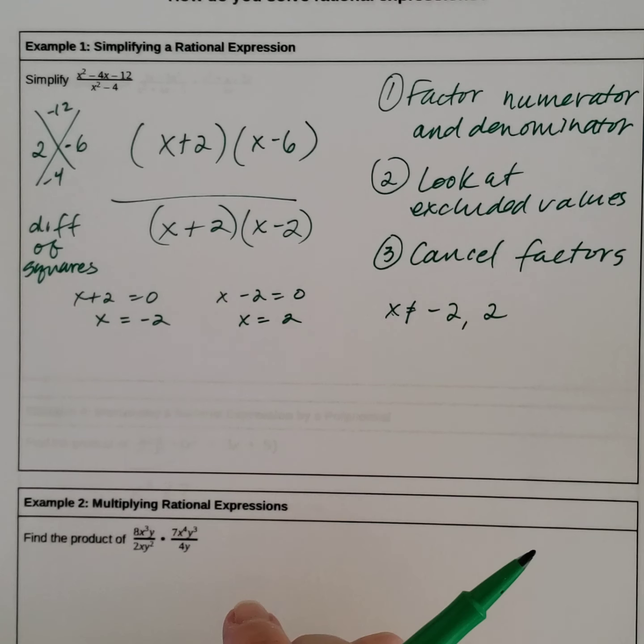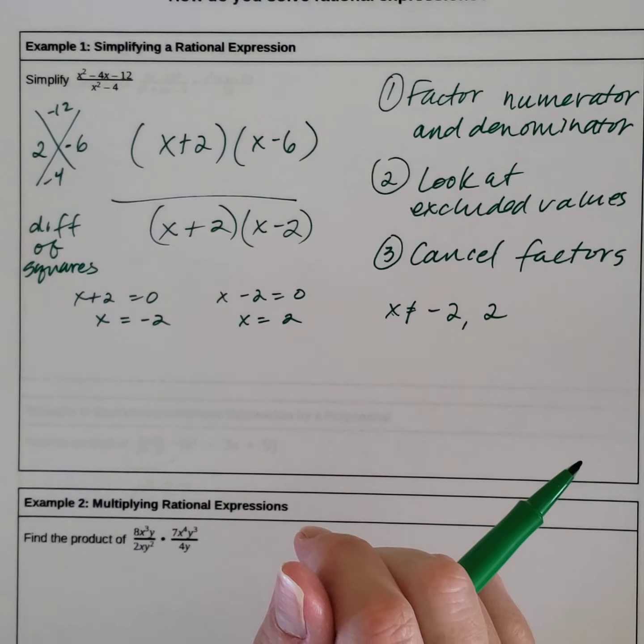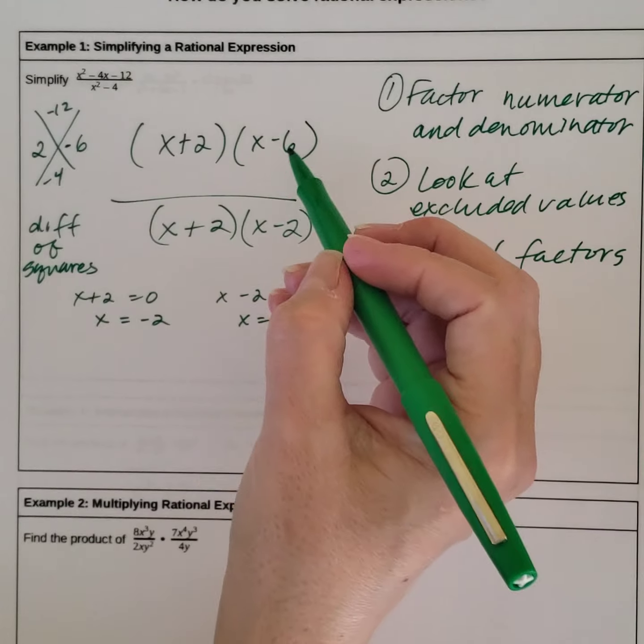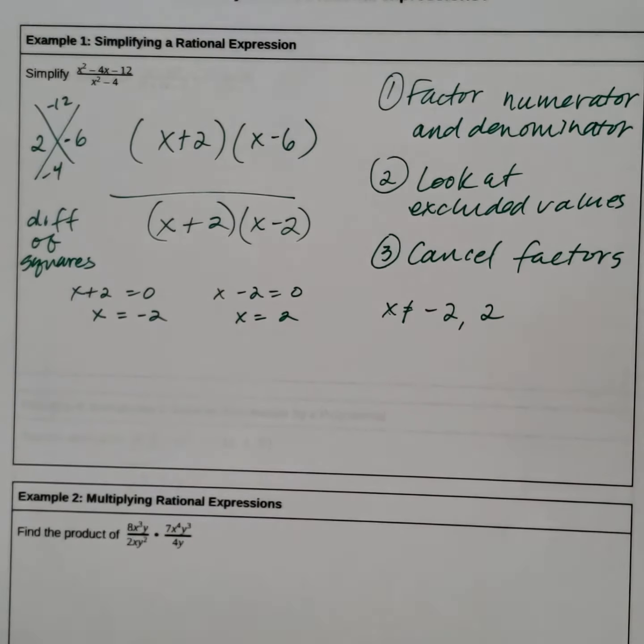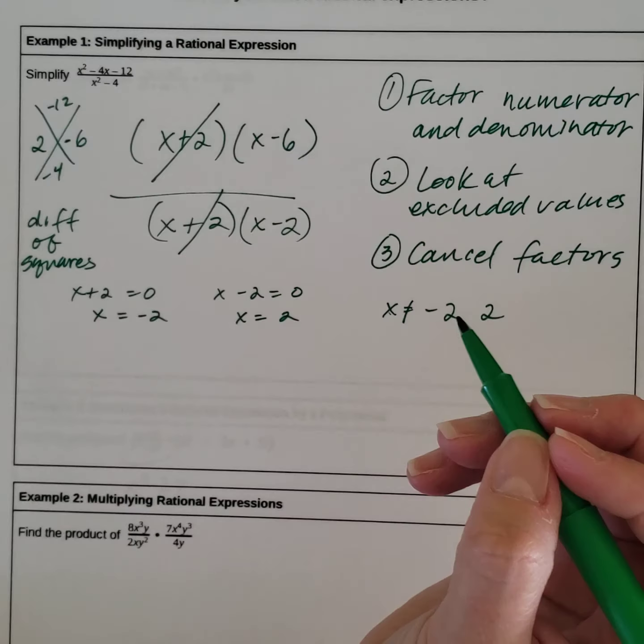Third step, cancel the factors. So what's in common? What do they have in the numerator and the denominator that we can factor out? It has to be a whole expression. So x plus 2, x plus 2. We take that whole expression and cancel it out because x plus 2 over x plus 2 equals 1.